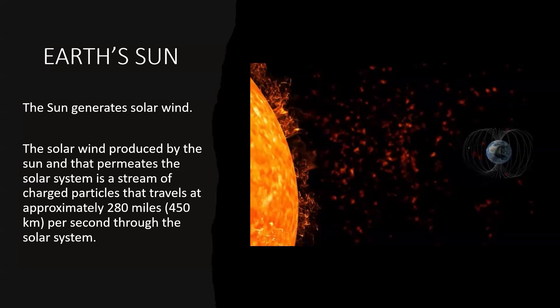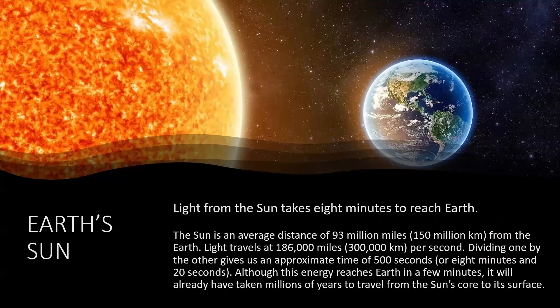The Sun generates something called the solar wind. This is produced by the Sun, and it permeates the entire solar system, and it is actually a stream of charged particles that travels at approximately 280 miles, or 450 kilometers per second, through the solar system. Recently we've been getting more and more information and warnings about solar flares, because they do pose a risk of damage to electrical equipment.